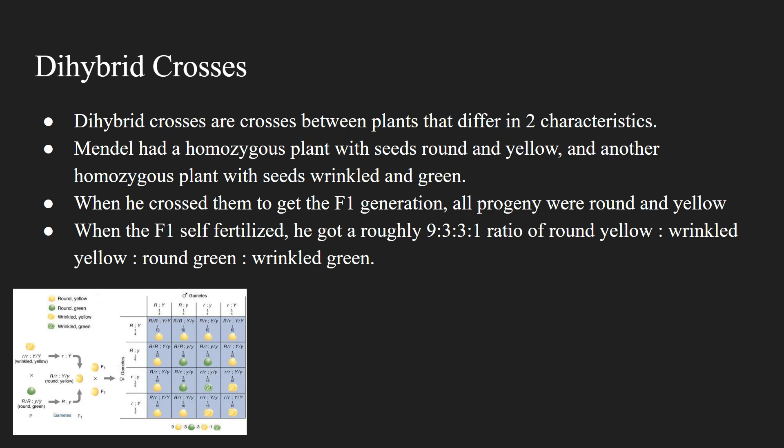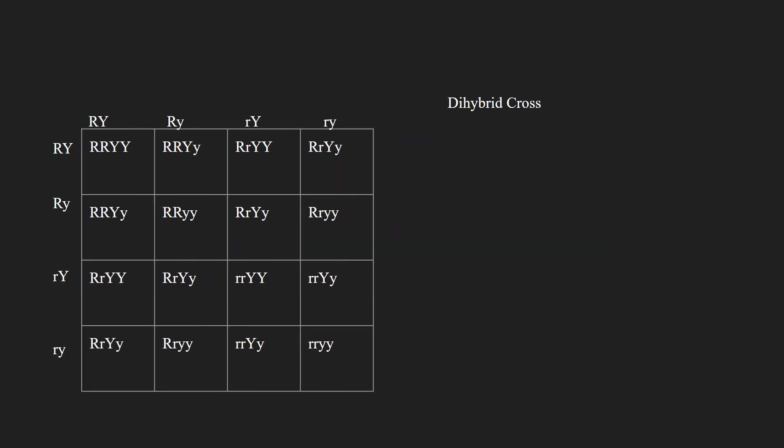Now let's talk about how to set up a dihybrid cross. Like before, a dihybrid cross uses a Punnett square, which is a grid. But since there are two characteristics this time, instead of a 2x2 grid for monohybrid crosses, we're using a 4x4 grid for a dihybrid cross. For the heterozygous plant Mendel was crossing, there are four possible gametes: RY both uppercase, Ry one uppercase and one lowercase, rY one uppercase and one lowercase, and ry both lowercase. Combining these gametes results in a wide array of different genotypes, and checking all the dominant and recessive genotypes shows a 9 to 3 to 3 to 1 ratio.